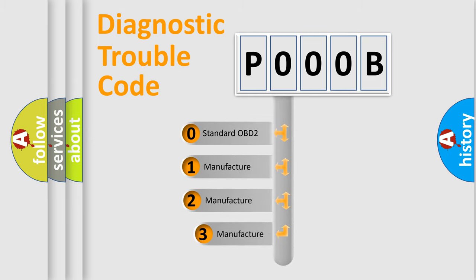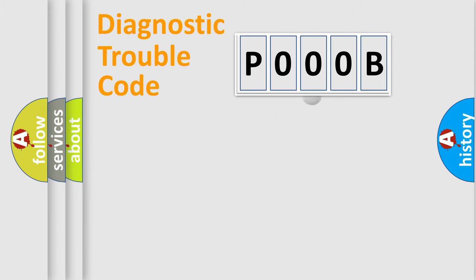If the second character is expressed as zero, it is a standardized error. In the case of numbers 1, 2, 3, it is a manufacturer-specific expression of the car error.